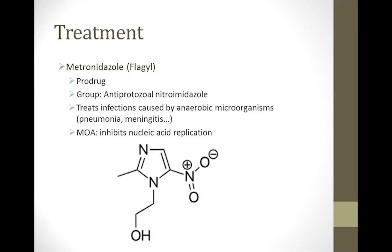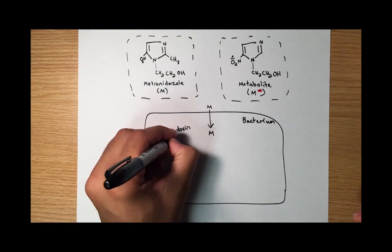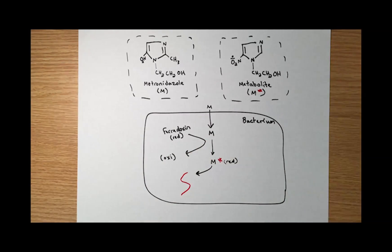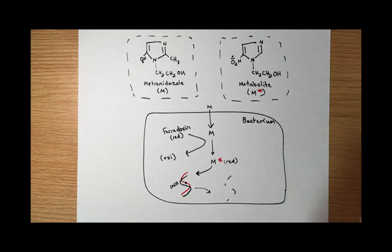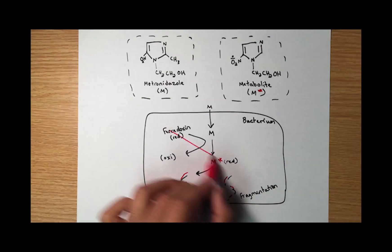Metronidazole is an antiprotozoal nitroimidazole pro-drug that commonly treats infections caused by anaerobic microorganisms, since it can be metabolized to its active form within these organisms. In general terms, how it works is by entering the microorganism and reacting with the reduced form of ferredoxin. Ferredoxin then becomes oxidized, and metronidazole becomes its reduced active metabolite. This covalently binds the DNA, disrupting its helical structure and inhibiting nucleic acid synthesis, leading to DNA fragmentation and ultimately microorganism death.